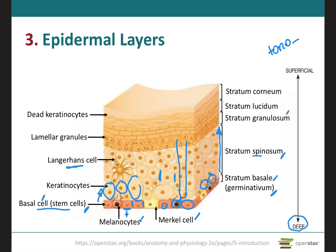The stratum granulosum — granulosum means little grains — will consist of three to five layers of slightly more flattened keratinocytes that are mainly undergoing apoptosis. Apoptosis is the orderly genetically programmed cell death in which the nucleus will fragment before the cells die. Therefore, the nuclei and other organelles of these keratinocytes in the stratum granulosum begin to degenerate as they move farther away from the source of nutrition, which are the blood vessels in the dermis. Even though keratin intermediate filaments are no longer being produced, they become more apparent because the organelles in the cells are regressing as they undergo apoptosis.